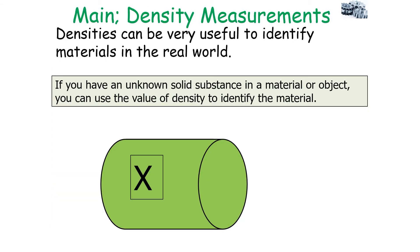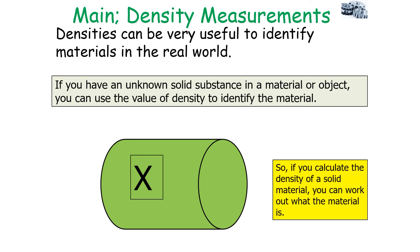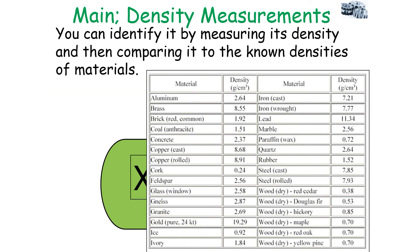Densities can be very useful for identifying materials in the real world. If you have an unknown solid substance or object, you can use the value of density to identify the material. Every solid material has the same density regardless of object dimensions, so if you calculate the density of a solid material, you can compare it to a list of known densities to identify it.